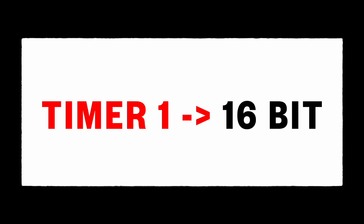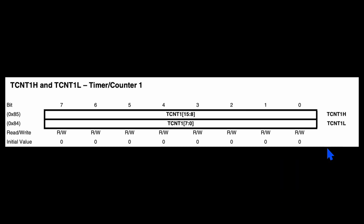Let's understand how to use Timer 1 of this ATmega Microcontroller using the overflow feature. Timer 1 is a 16-bit timer, meaning the counter register has a size of 16 bits or 2 bytes. This counter value can be incremented from 0 to 65535, which is 2 to the power of 16.